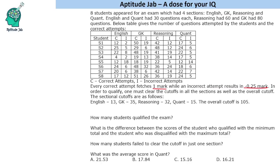The first question — how many students qualified the examination — does it require you to calculate all values? Can we just observe and find who is missing the cutoffs? The second question about the difference between the highest and lowest qualifying scores is more time consuming. How many students failed to clear the cutoff in just one section is observation-based. I'm writing O for observation-based and C for calculation-based questions.